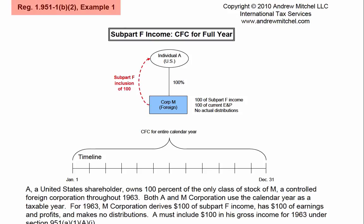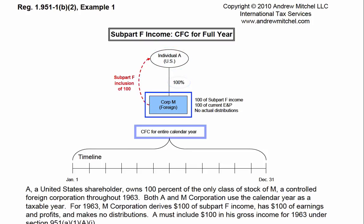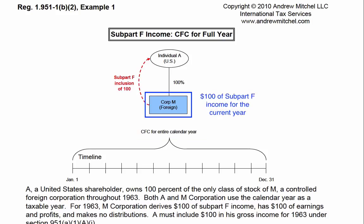In Example 1 of Regulation 1.951-1(b)(2), Individual A was a U.S. individual who owned 100% of Corp. M, a CFC, for the entire year of 1963. Corp. M had $100 of subpart F income for the current year.